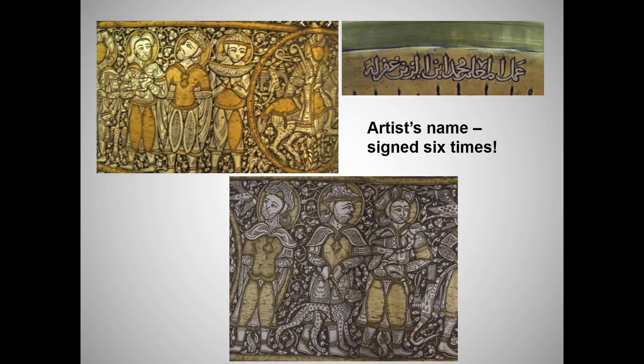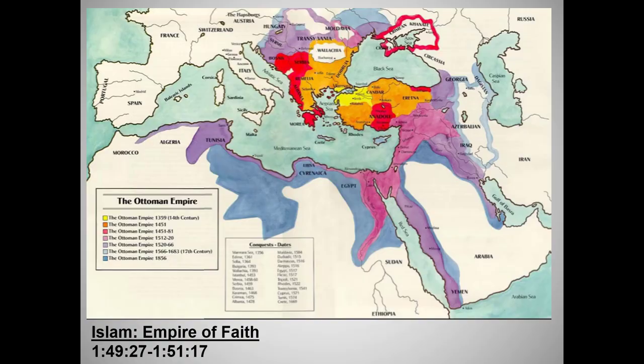Here are a few images from the basin, including the artist's signature, which appears six times. The fellow walking a leopard is especially notable. Now, I'm going to finish up today with the Muslim empire that ended the Christian Byzantine Empire, turning its capital of Constantinople into Muslim Istanbul. Let's watch a brief video introduction to this fascinating empire, which ruled much of Eastern Europe and the Middle East into the 20th century. Then I'm going to return to the one Ottoman work we will study — the mosque of Selim II at Edirne.